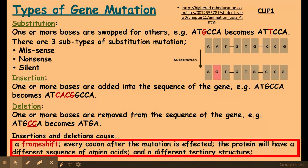For gene mutations there are three general types: substitution, insertion, and deletion. Substitution is where we change one base for another — for example, changing an A base to a G — and this can cause either a missense, nonsense, or silent mutation. An insertion is where one or more bases are inserted into the sequence. Deletion is where bases are removed — for example, CC has been deleted to form a new sequence.